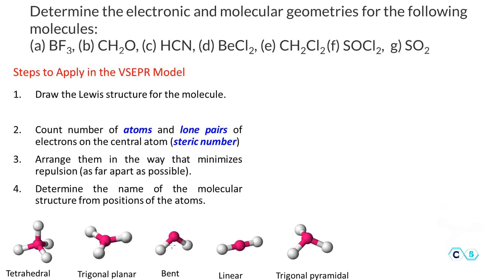We are going to determine the electronic and molecular geometries of the following molecules according to the steps discussed in the previous video about the VSEPR model. We will pick from five geometry possibilities and place the correct geometry near each structure so we can see how it looks in 3D. All of these molecules go up to steric number 4, where the steric number is the number of electron pairs around the central atom, including bonding and non-bonding electrons.